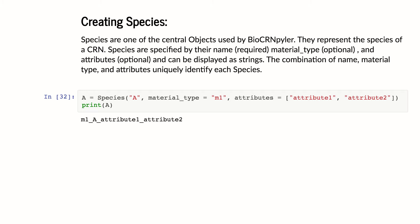So here when we print A, we get our material type M1 underscore our name underscore our list of attributes. And that is sort of the string identifier of species called A.